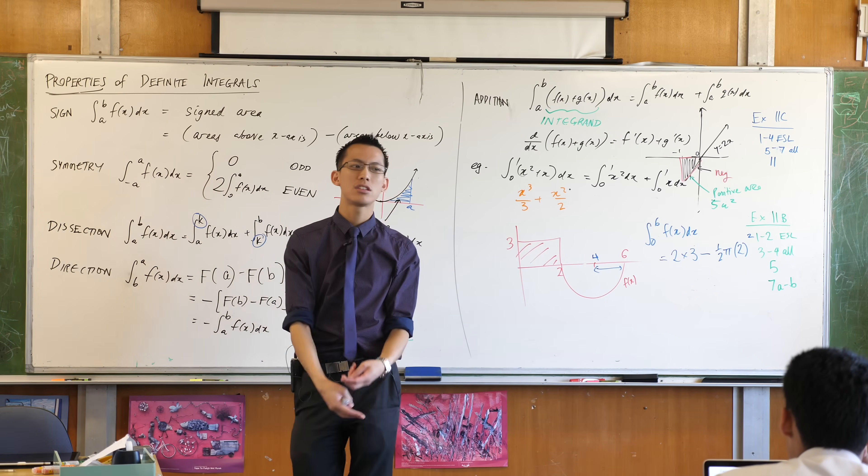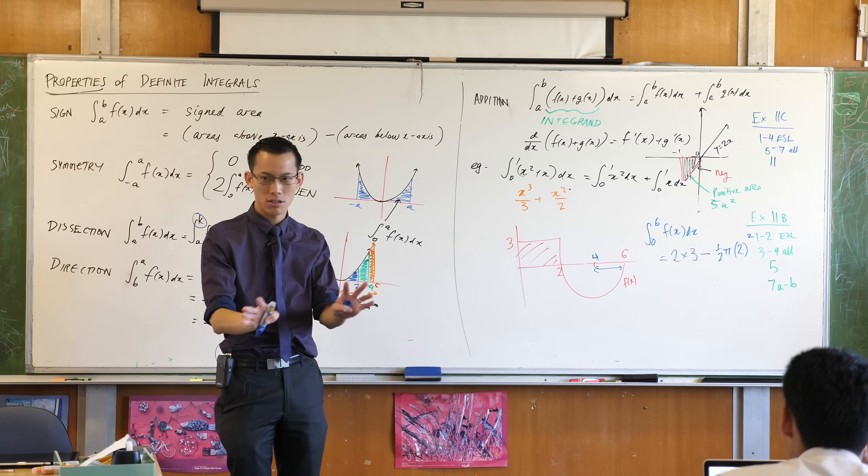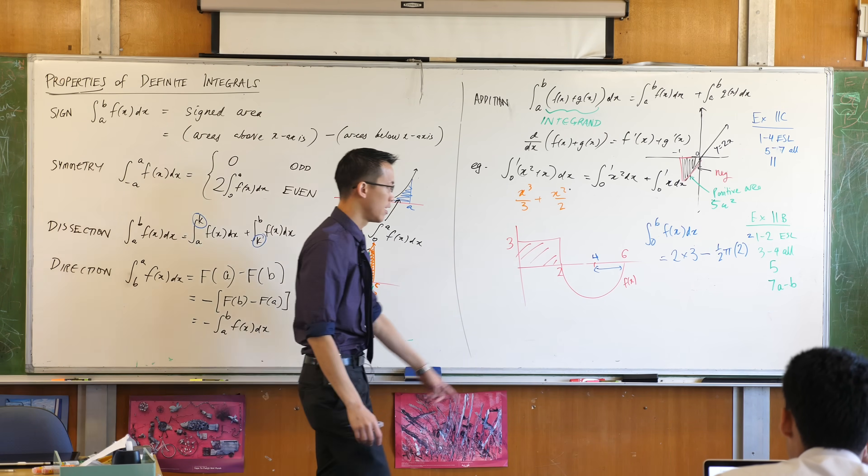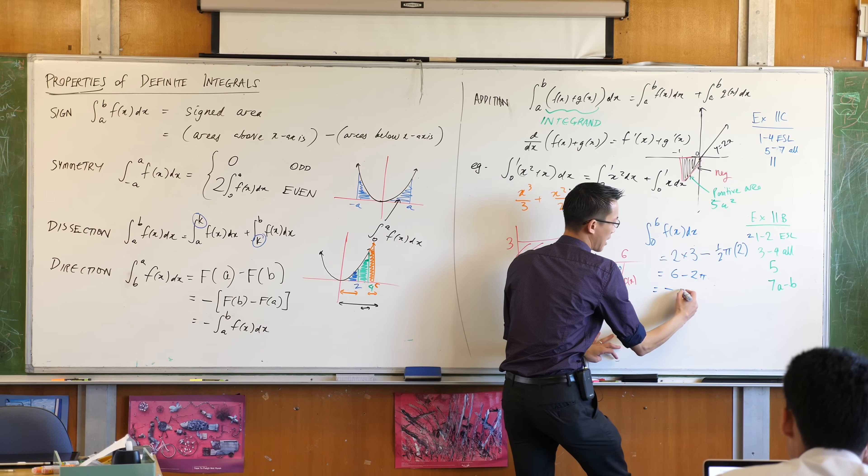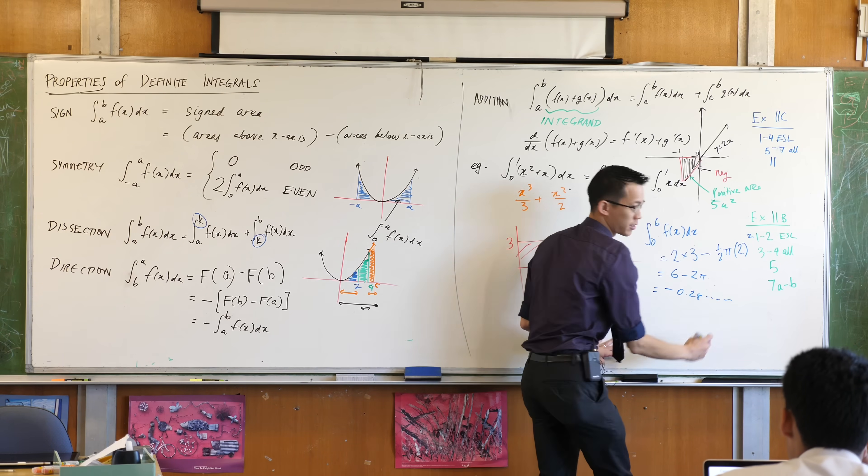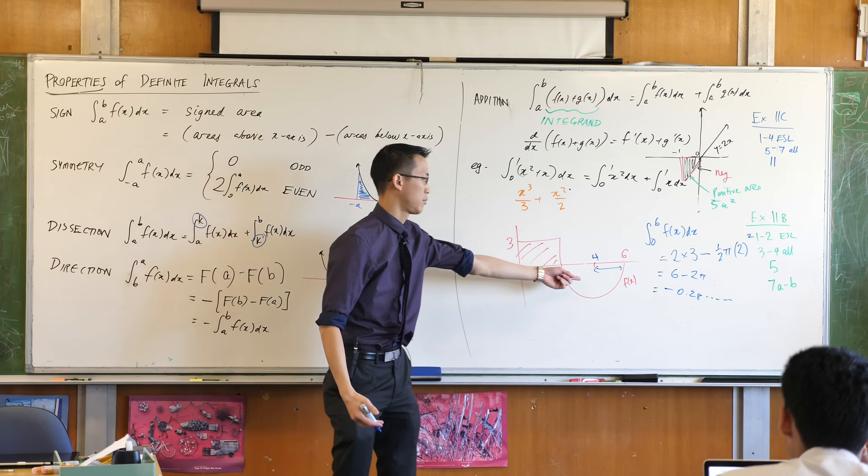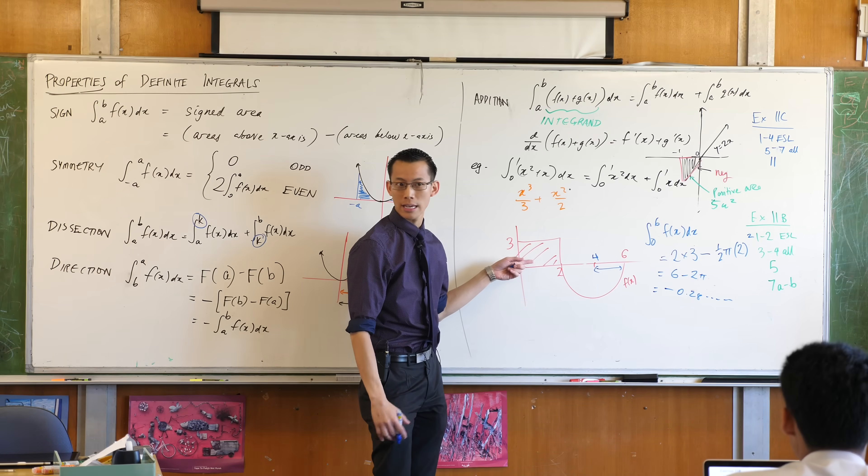Whereas over here when they said tell me what the area is, it's just a measurement question, nothing to do with calculus and all that fancy stuff. So then you would say that's 6 take away 2 pi, so that's 2 squared, that's going to be negative 0.28 something, which is negative because that semicircle ends up being bigger than that rectangle.